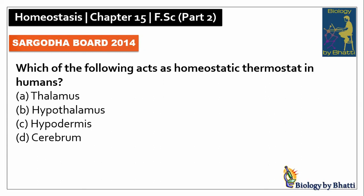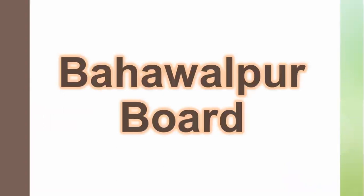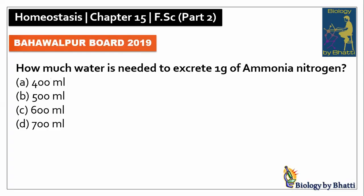DG Khan Board 2014: which of the following acts as homeostatic thermostat in humans — hypothalamus, B option. Sargodha Board 2014: which of the following is not an endotherm — amphibians, B option. Bahawalpur Board 2019: how much water is needed to excrete 1 gram of ammonia nitrogen — 500 ml, the answer was B option.